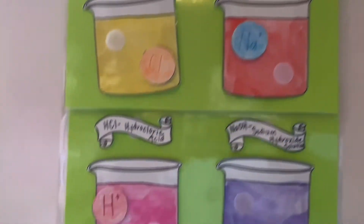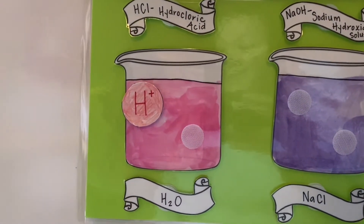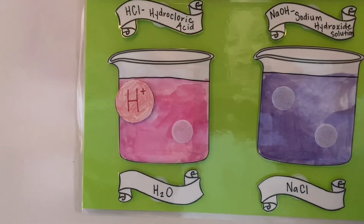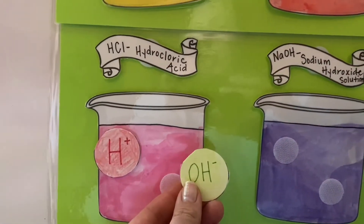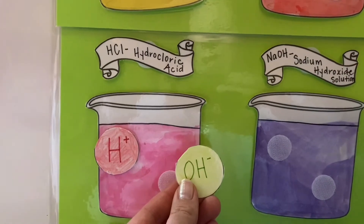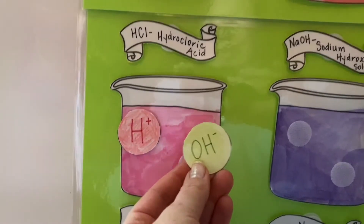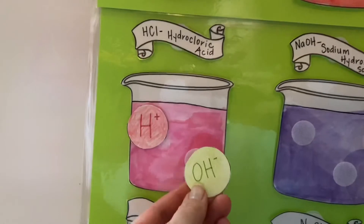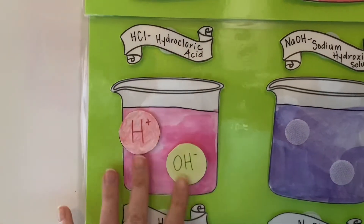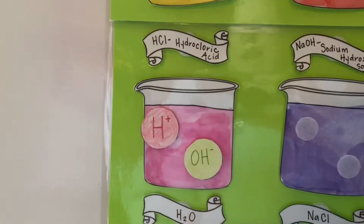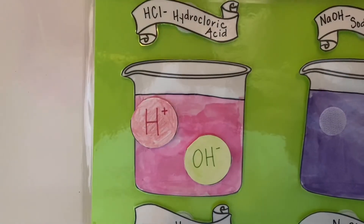The hydrogen ion from the acid is going to have to ask the hydrogen ion from the base: 'Do you accept me?' And the base is going to say yes — the base accepts the hydrogen ion. So they are going to get married together in another beaker and create a new solution.